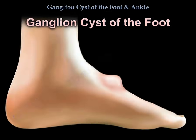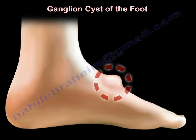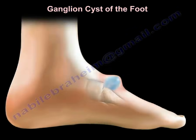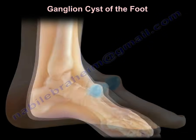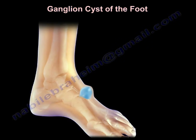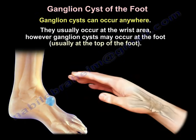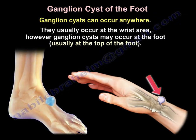Ganglion cysts of the foot and ankle. Ganglion cysts can occur anywhere. They usually occur at the wrist area. However, ganglion cysts may occur at the foot, usually at the top of the foot.